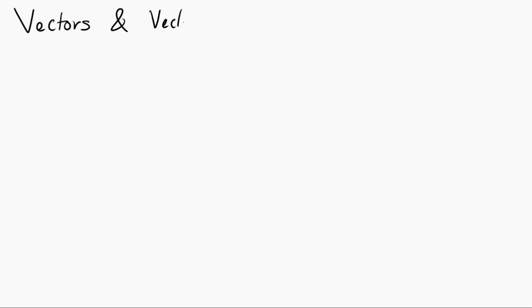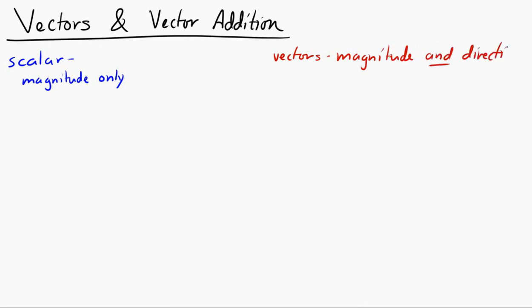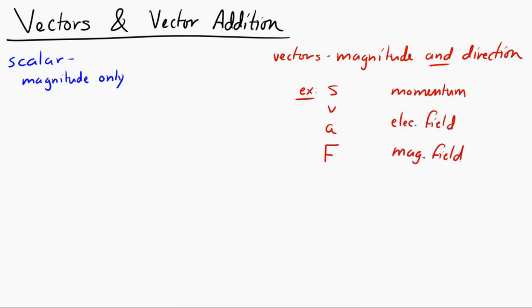Let's take a look at vectors and vector addition. Remember, there are scalars and there are vectors. Scalars are quantities which only have magnitude, and vectors are quantities which have magnitude and direction. We've seen a number of vectors already — vectors include displacement, velocity, acceleration, force, and we'll see other vectors later on, like momentum, electric field, and magnetic field.